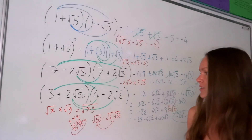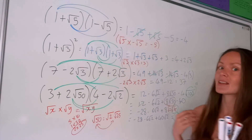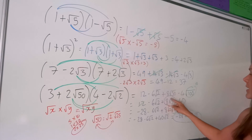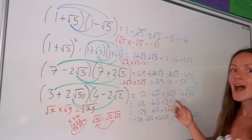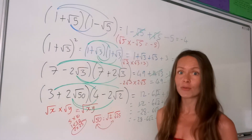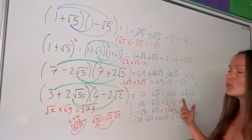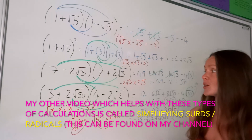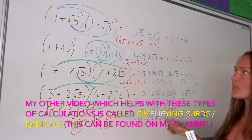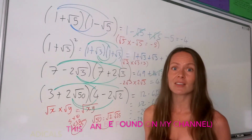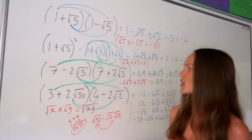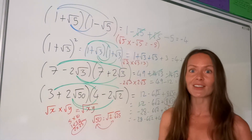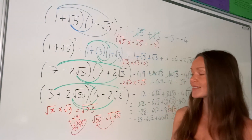So there was lots to do in that last question. We were just expanding the brackets as normal, but you needed to do some simplifying with root 50. I do have another video on simplifying surds with more examples. You might also get a combination where you're expanding brackets and rationalizing the denominator — I have that in another video as well. So make sure you check those videos out. Bye-bye from me.